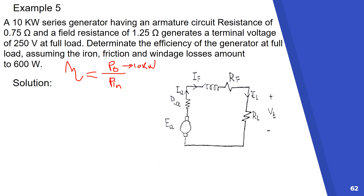We have armature circuit resistance R_A equal to 0.75 ohm, and the field resistance R_F equal to 1.25 ohm. The terminal voltage V_terminal is 250 volts.